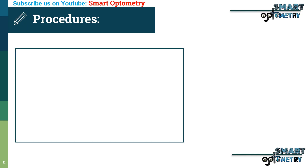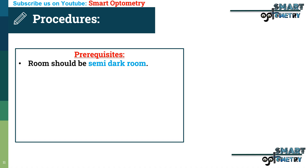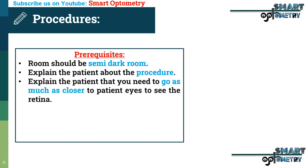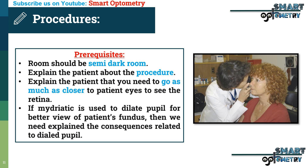Procedures of the test. Prerequisites: the room should be semi-dark. Explain to the patient about the procedure, including that you need to get as close as possible to the patient's eyes to see the retina. If a mydriatic is used to dilate the pupil for a better view of the patient's fundus, then we need to explain the consequences related to having a dilated pupil.